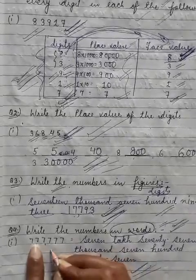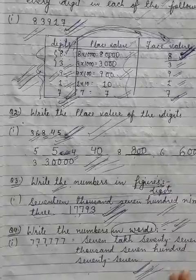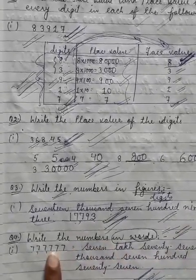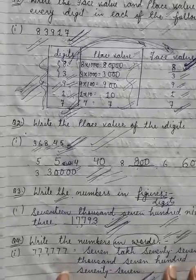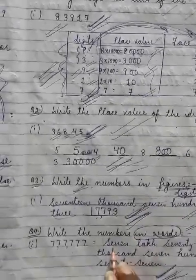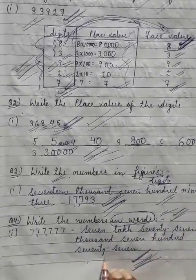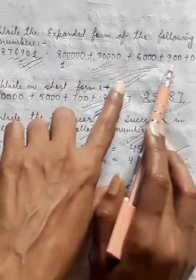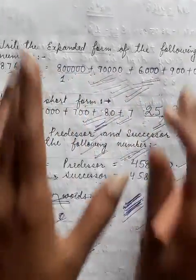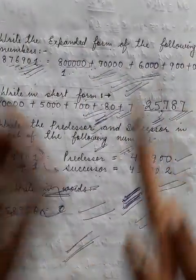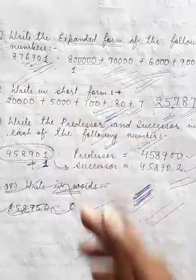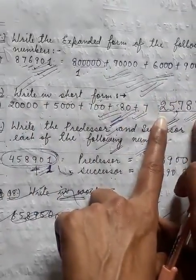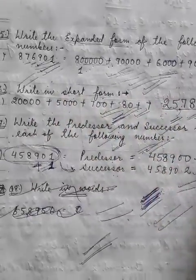We have to write the number name directly by following the steps from the previous class. The answer we got was seven thousand seven hundred and seventy-seven — 7,777. For expanded form, we write the place value of each digit and connect them with plus signs. And for short form, if we add the expanded form together, we get the short form — expanded form ko add kar do, short form mil jayega.